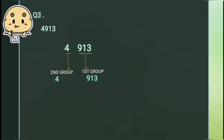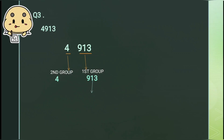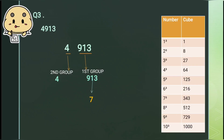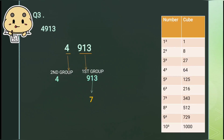Again we will look at the ones digit of the first group, because the first group gives us the ones digit of the cube root. Here the ones digit is 3, so the ones digit of the cube root will be 7. We know that 3 cubed is equal to 27, which ends in 7, so its cube root will end in 3. I explained this in my previous video on properties of cube numbers. You should learn these cube numbers — there are only 10 cube numbers from 1 to 1000, and knowing them will help you a lot.